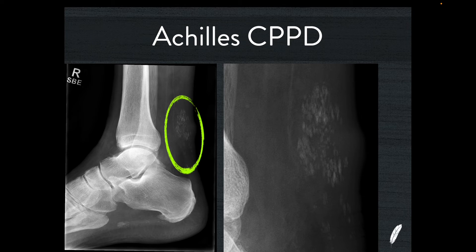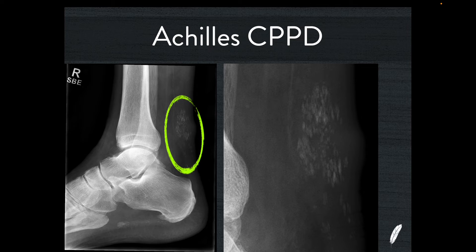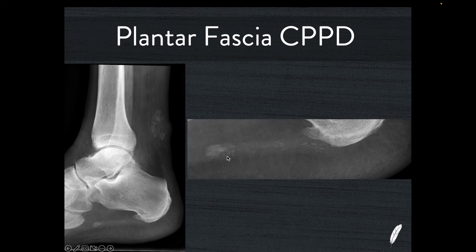Another nice finding — if you look at the plantar fascia here, you can see there's an enthesophyte, but the plantar fascia itself shows a very similar involvement. So the CPPD has not only invaded and spread throughout the Achilles tendon, but it's also involving the plantar fascia — making this a two-location process.